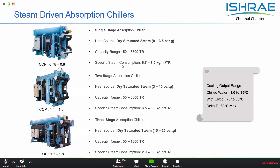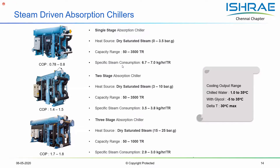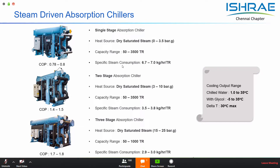The two-stage absorption unit requires higher steam pressure — around 6 to 8 bar. Because a higher grade of energy is used, this unit gives a lower steam consumption — literally half that of a single-stage chiller — and the COP of this unit is double that of the single-stage. The type of technology used is dependent on the energy source available, i.e., its temperature and pressure.